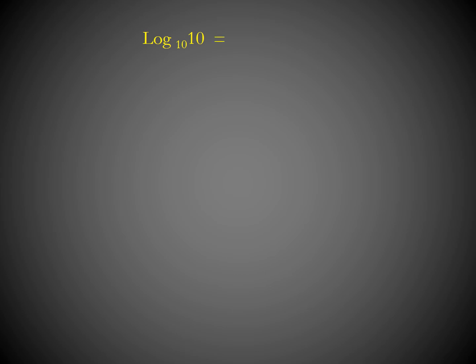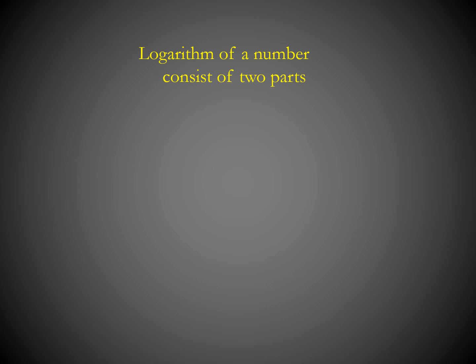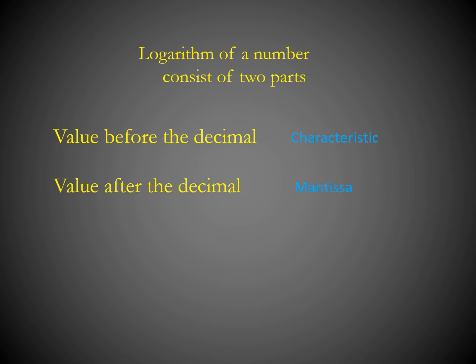Now, log 10 to the base 10 equals 1, which can be written as 1.00. The digit before the decimal — in this case 1 — is called the characteristic of the logarithm. The value after the decimal — here 0.00 — is called the mantissa. So a logarithm of a number consists of two parts: the characteristic (before the decimal) and the mantissa (after the decimal).